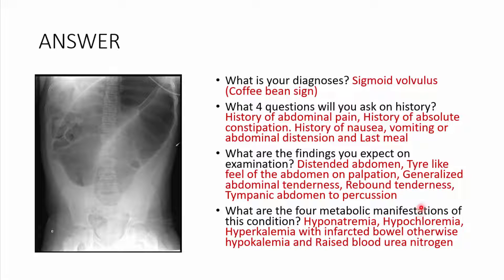The four metabolic manifestations: you may get hyponatremia and hypochloremia — because most electrolytes are being dumped into the lumen of the intestines under the pathophysiology of intestinal obstruction. You may also have hyperkalemia due to bowel infarction, since cells are bags of potassium — once they die, potassium is released into the bloodstream. Otherwise generally you may also have hypokalemia and a raised blood urea nitrogen.